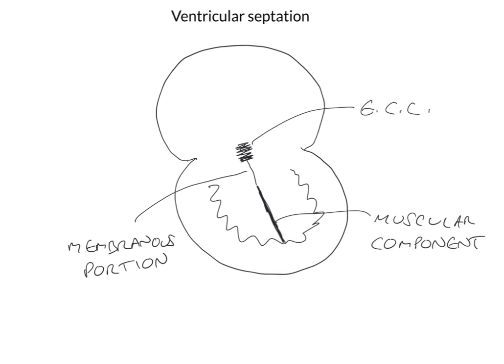An important thing to bear in mind is that, like with all developmental processes, things can go wrong. And it tends to be the case that if something goes wrong with the process of ventricular septation, it is the membranous portion which is involved. So ventricular septal defects are most commonly defects within the membranous portion of the interventricular septum.